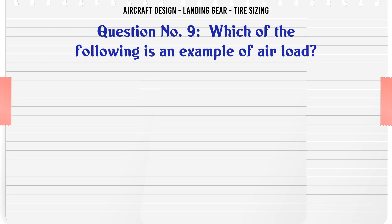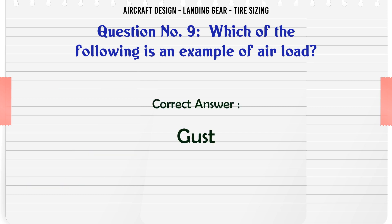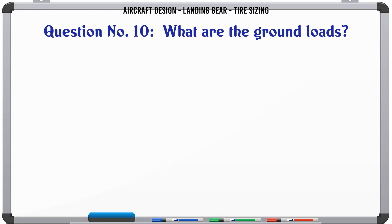Which of the following is an example of an air load? A) Gust, B) Taxi, C) Wheel stress, D) Landing. The correct answer is gust.